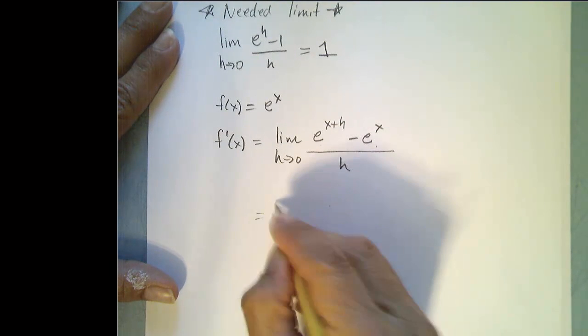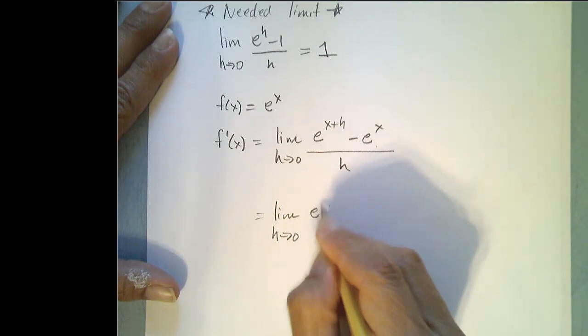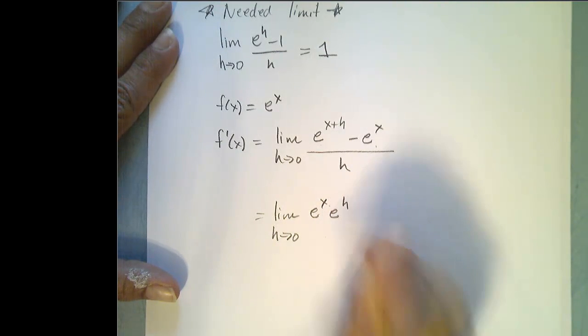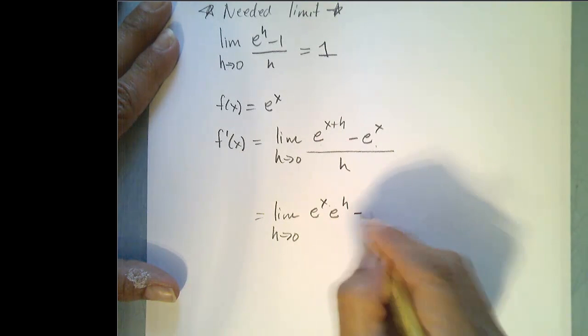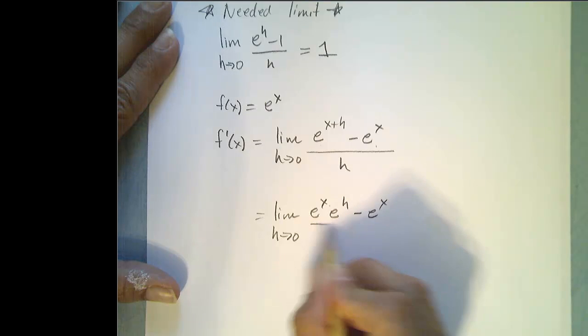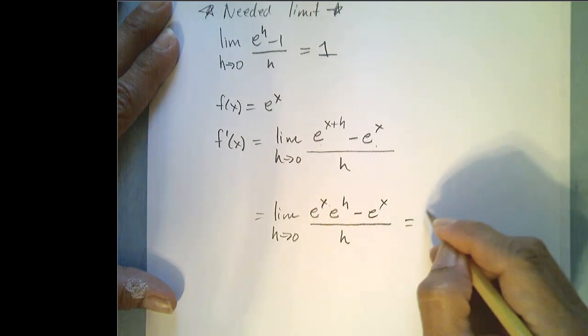Now we use our rules of exponents. So this is the limit as h goes to 0, e to the x times e to the h, right? If we multiply like bases, we add their exponents. Minus e to the x all over h. I'm going to factor out this e to the x.